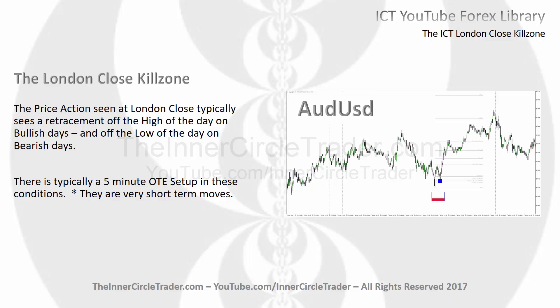The price action seen at London Close typically sees a retracement off the high of the day on bullish days, and off the low on days that are seen as bearish. There's typically a five-minute optimal trade entry setup in these conditions, but it's very important to remember these are very short term in nature. The moves aren't a lot — they're not like the equivalent of a London Open or a New York Open. It's typically going to be very small, short term — 10, 15, maybe even 20 pips. If you get anything more than 20 pips, that's going to be a rarity.